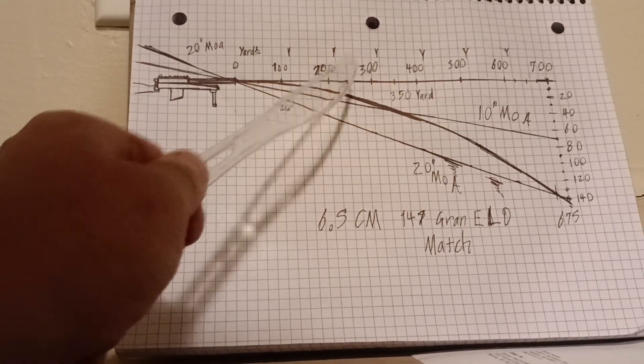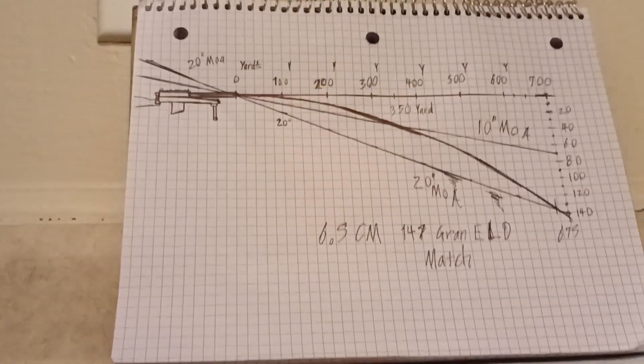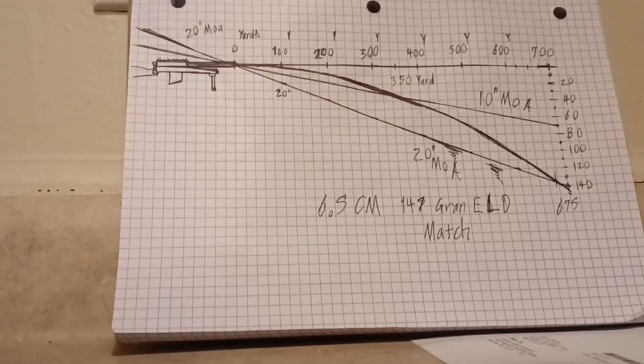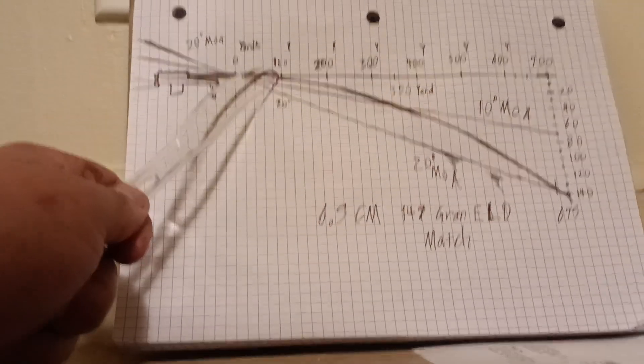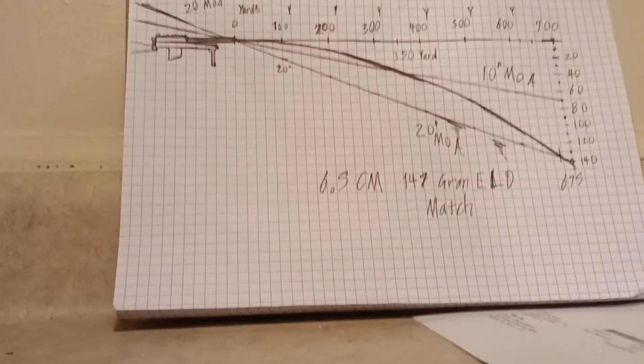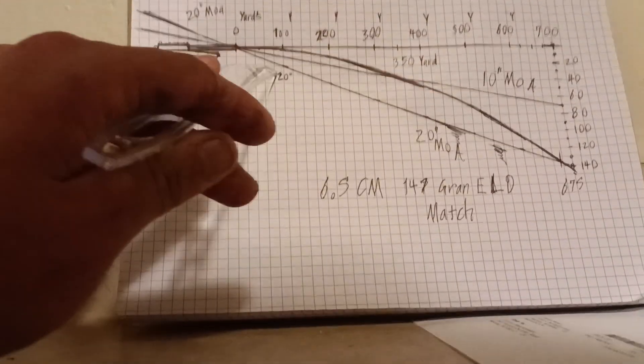You have your 100, 200, 300, 400, 500, 600, and 700-yard marks, and then you have your fall in inches. Each line going down is 10 inches in representation, so you can see exactly how far 20 MOA puts you down at 100 yards.